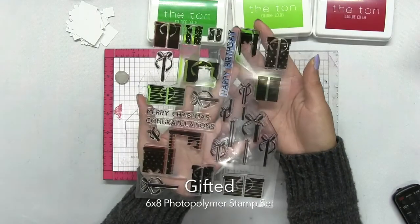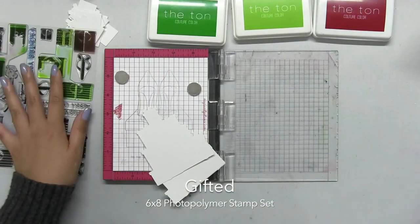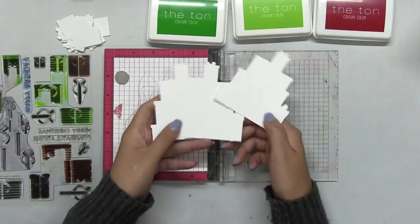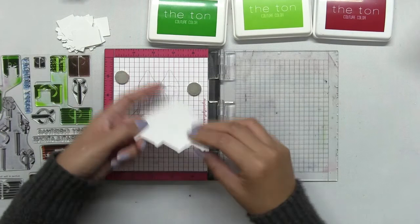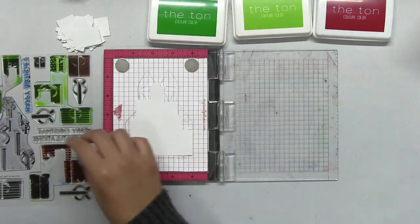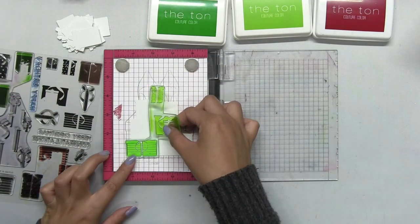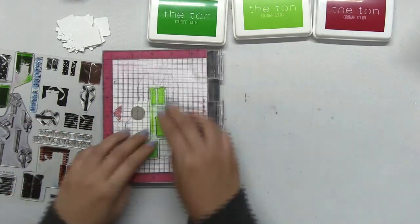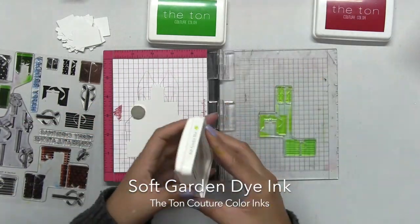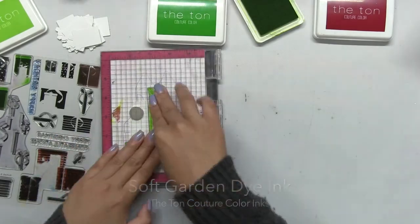Let's get started with stamping the 6x8 gifted layering set. I've already cut out some of the SVG cut files on my Cricut and then I'm going to stamp the three stamps in this set to get a gift clustered result.